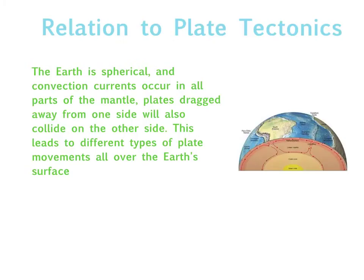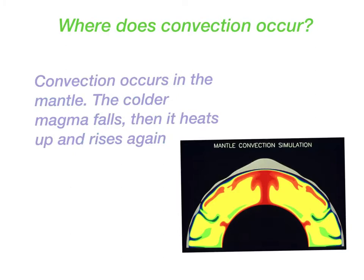The Earth is spherical and convection currents occur in all parts of the mantle. Plates dragged away from one side will also collide on the other side, leading to different types of plate movements all over the Earth's surface. Convection occurs in the mantle — as the colder magma falls, it heats up and then rises again.